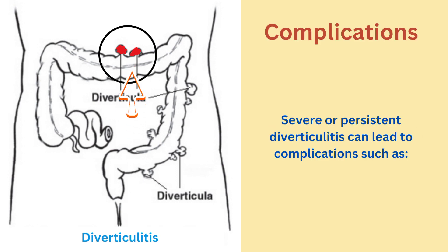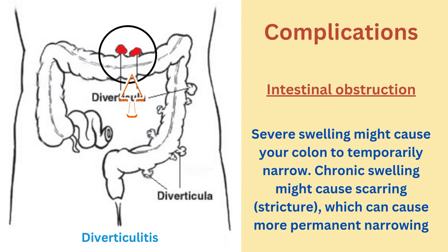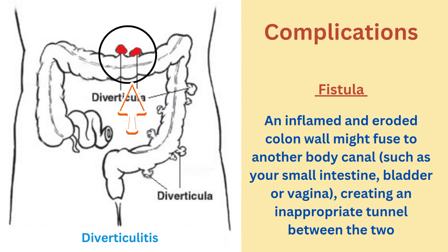Severe or persistent diverticulitis can lead to complications. First, gastrointestinal bleeding — bleeding from diverticula can be severe and lead to anemia. Second, intestinal obstruction — severe swelling might cause your colon to temporarily narrow, and chronic swelling might cause scarring or stricture, leading to more permanent narrowing.